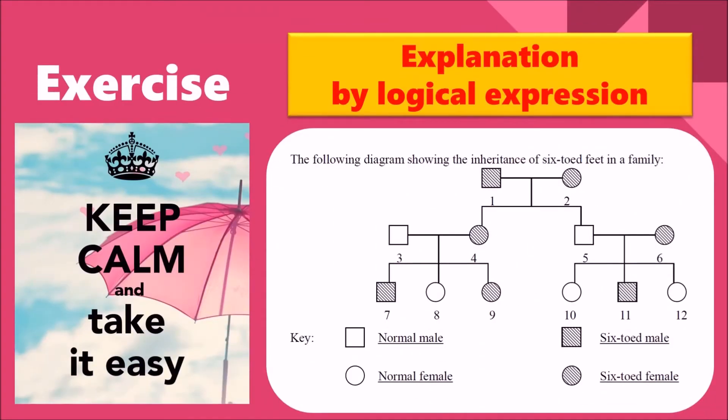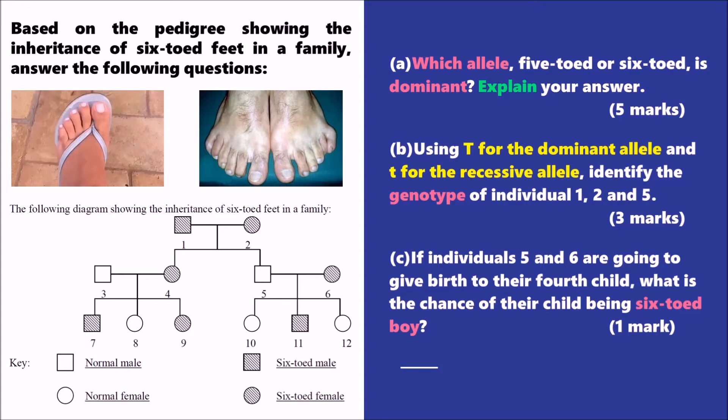We are going to investigate the pedigree which shows the inheritance of six-toed feet in a family. There are three questions for a comprehensive understanding of pedigree analysis. Part A, we need to identify the dominant allele.